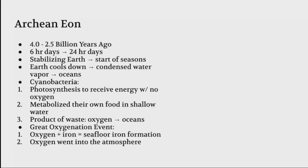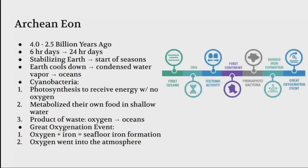The Archaean eon was from 4 to 2.5 billion years ago. The start of this was six hour days, and because Earth was still adapting, it changes from six hour to 24 hour days. Because the Earth was still stabilizing, this becomes the start of seasons.